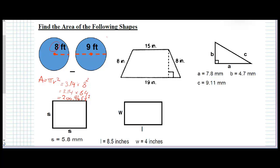Let's take the second circle. Here the diameter is 9 — this is not the radius, it's the diameter. So how do we find the radius from the diameter? We take the diameter and divide it by 2. This gives us a radius of 4.5.